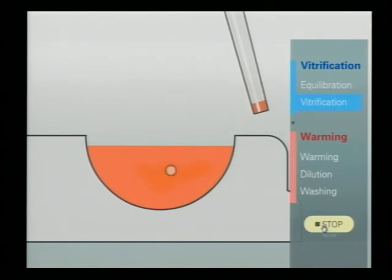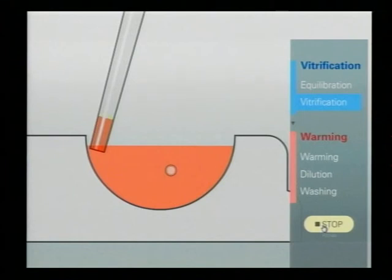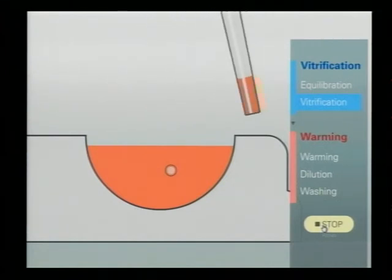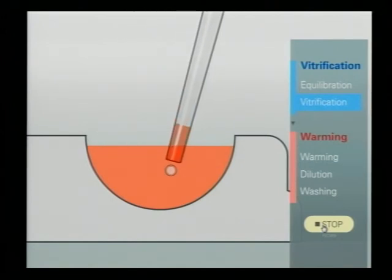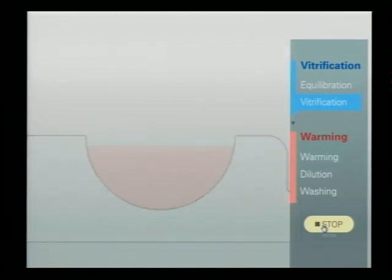And again wash inside of the pipette. Wash, wash, then aspirate fresh VS and take oocyte as top as possible and place it on the surface of a cryotech sheet.